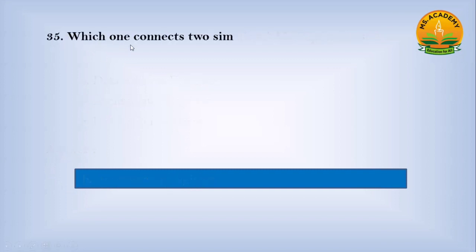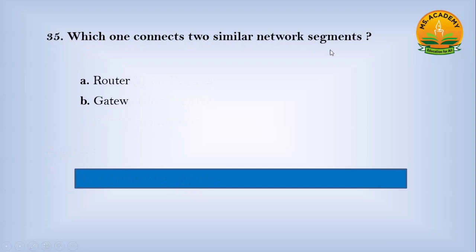Which one connects two similar network segments? Option A Routers, option B Gateway, option C Bridge. Answer: C. Number Bridge.